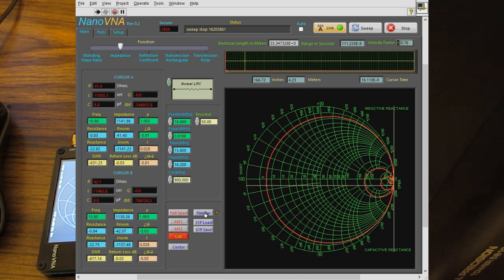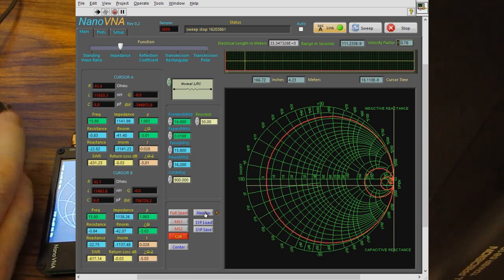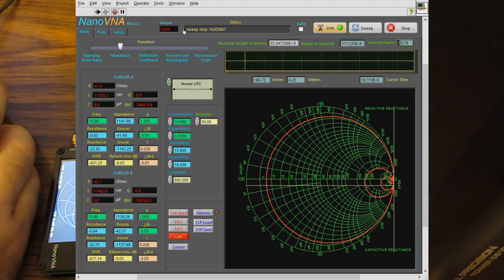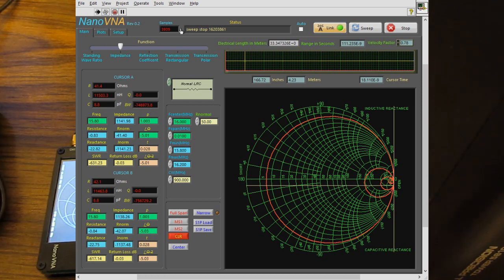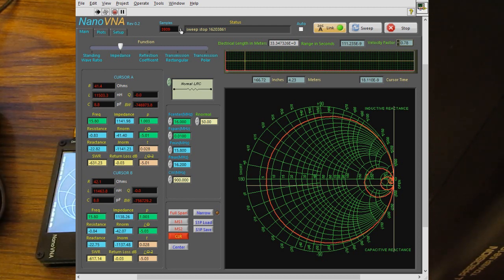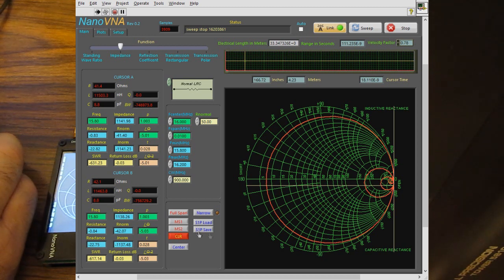So you can see now we have a fair amount of resolution. At the top of the screen here, you can see it's collected 3,939 samples. So a lot higher resolution than the typical 101 samples that the nano provides. Again, the plan is to take this data now and create a touchstone file. So let's go ahead and do that. We just hit S1P save. And I store that into my 16 megahertz crystal file.